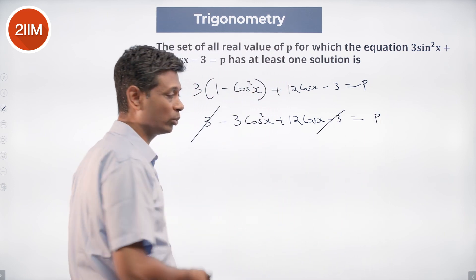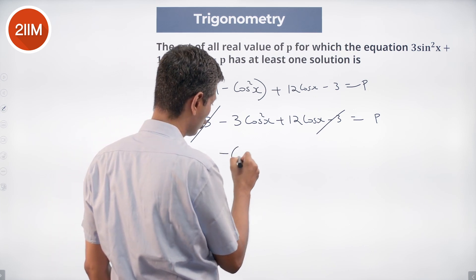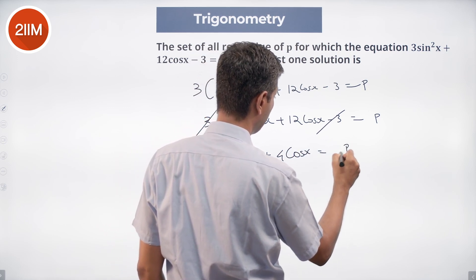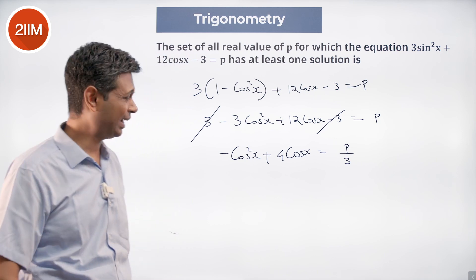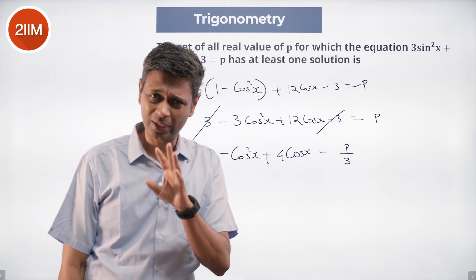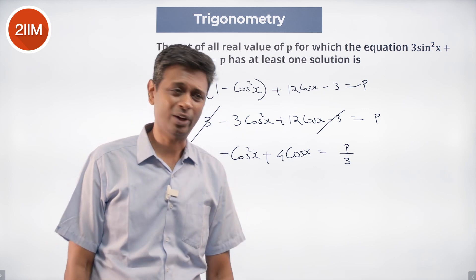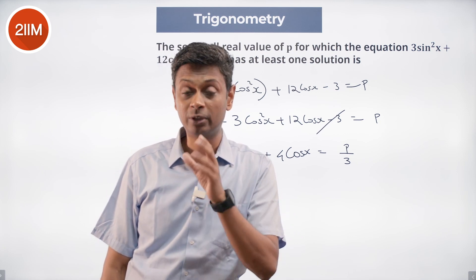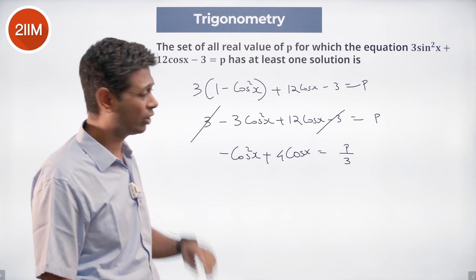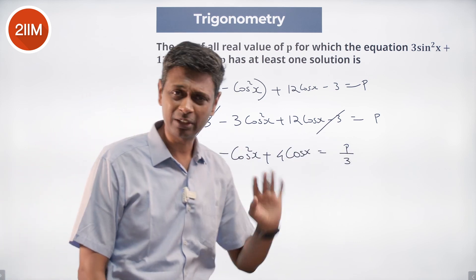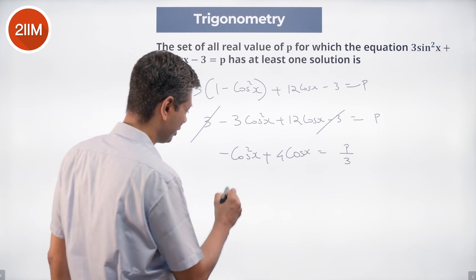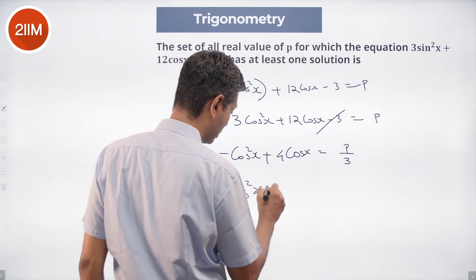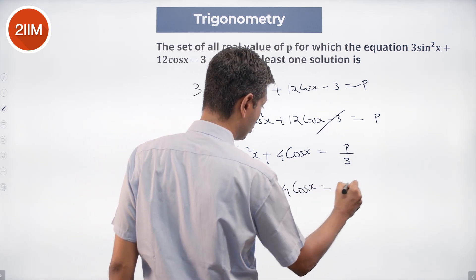The threes cancel nicely, leaving -3cos²x + 12cosx = p. I prefer my quadratic to have a leading coefficient of 1, so I divide through by 3 and multiply by -1. This gives cos²x - 4cosx = -p/3.